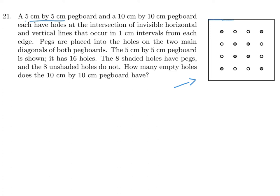So the 5x5 board measures 5cm across, and 1cm intervals from the edge create holes — there are 16 of them. The holes on the two diagonals are shaded, meaning they have pegs. There are 8 shaded holes and therefore 8 unshaded holes. That's just the explanation of how this process works.